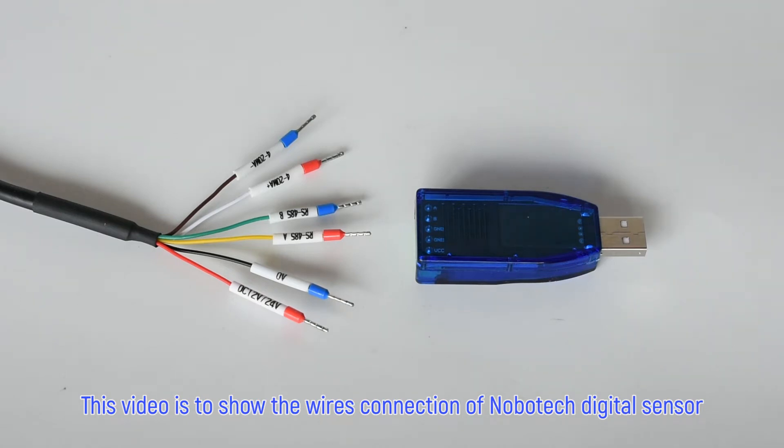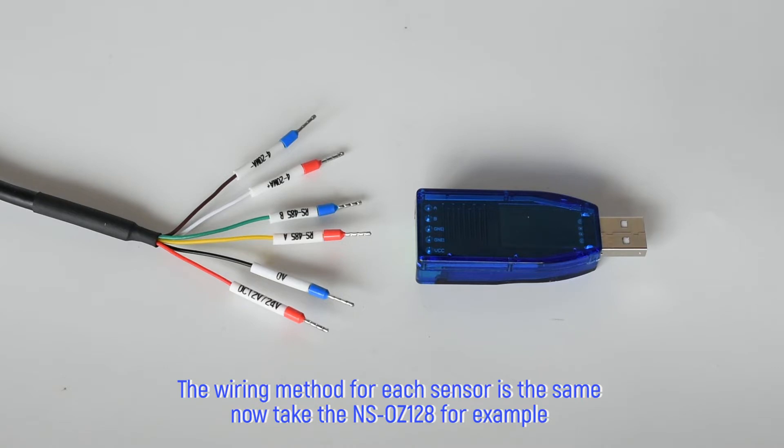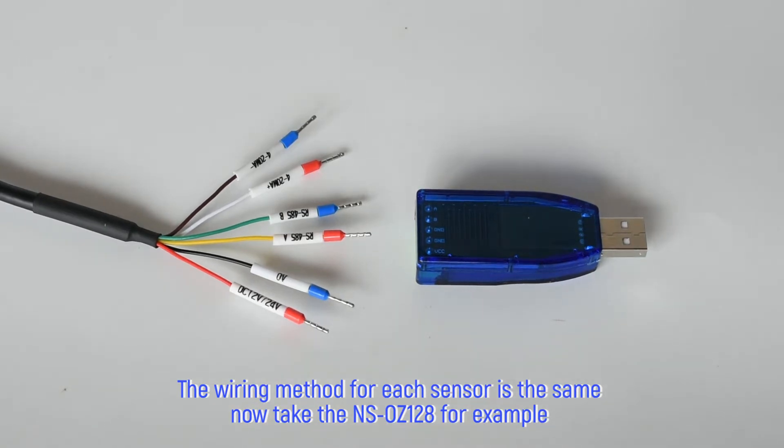This video shows the wire's connection of Nobatec digital sensor. The wiring method for each sensor is the same. Now take the NSOZ128 for example.